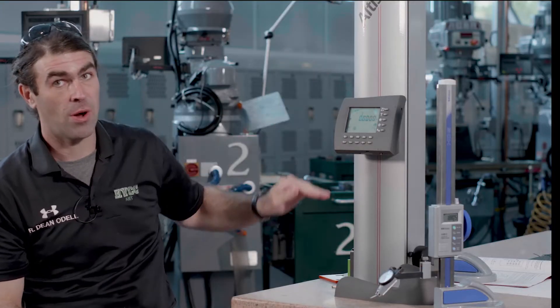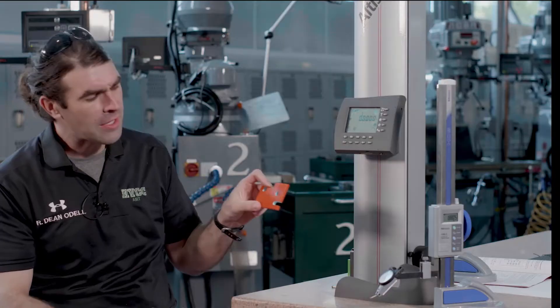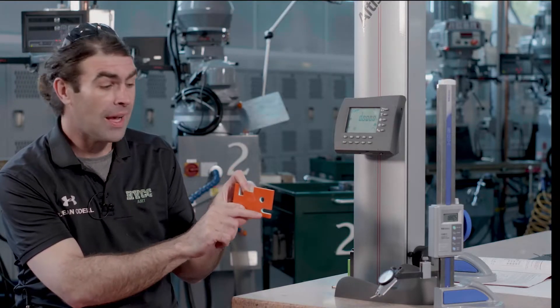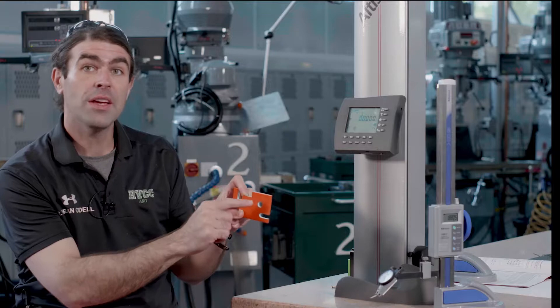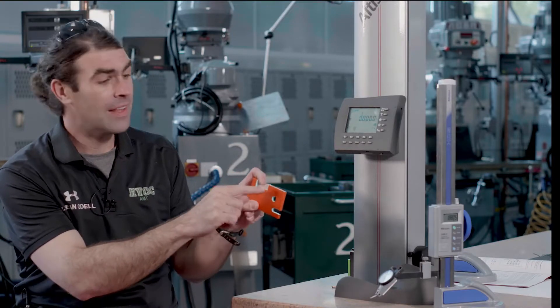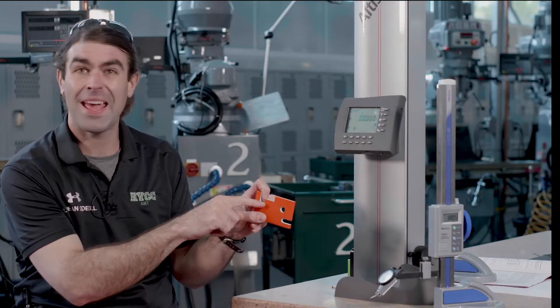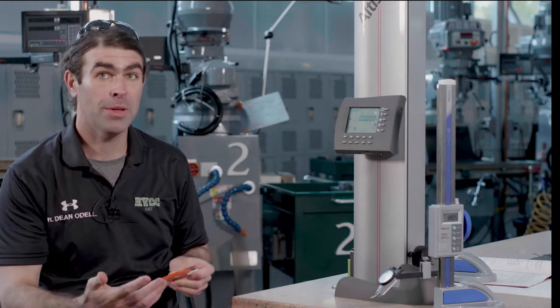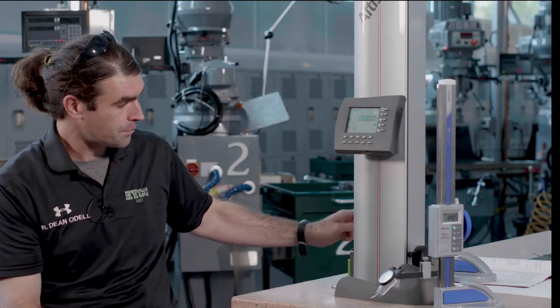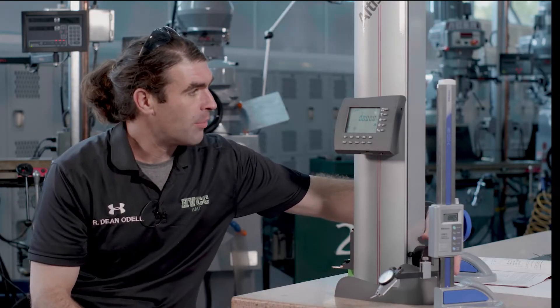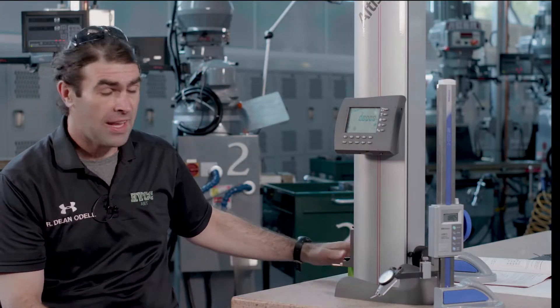That establishes a datum A. Now, you can store three datums in here, but they're not quite like the datums on a drawing. This only measures in one axis. Say you wanted to know the distance between the center of this slot to the center of this hole, you can make this datum A, make this datum B, and then you can measure from datum B to over here, or from datum A to over here. It gives you a lot of cool capabilities. I've zeroed the height on the table, and we're going to take a reading.